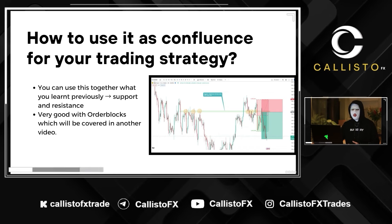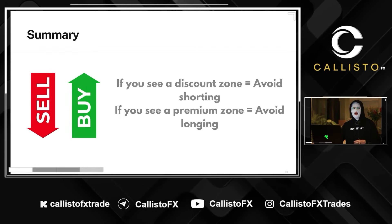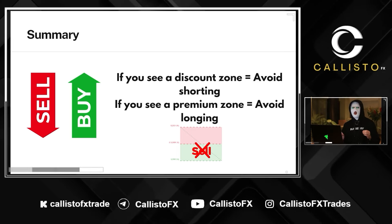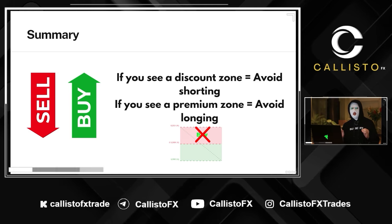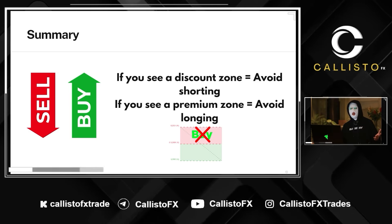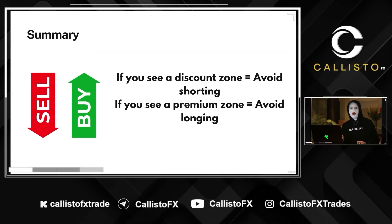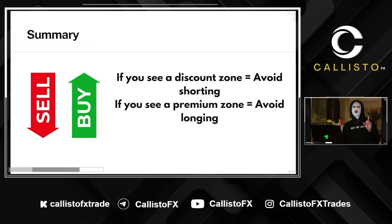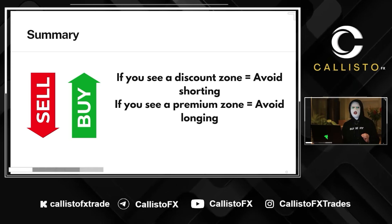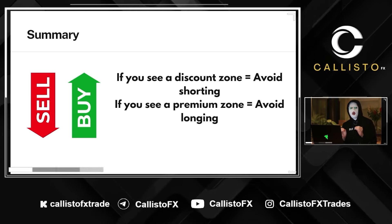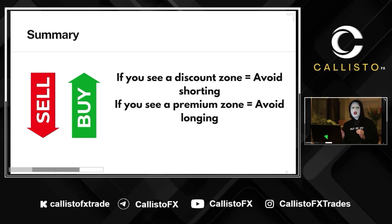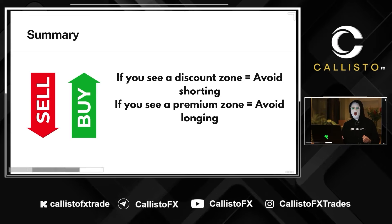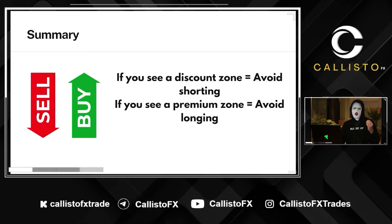So basically, in summary, let's keep it real simple: if you see price is in a discount zone, you must avoid shorting; if you see a premium zone, avoid longing. You want to enter the market when you have an edge. What you can do right after this video is go to TradingView, look at the charts, and start drawing your premium and discount ranges to see where the good areas are to long and short — do this across multiple pairs until you're really good with it.